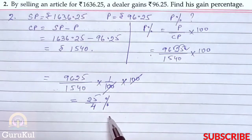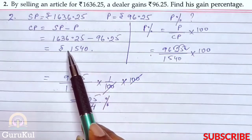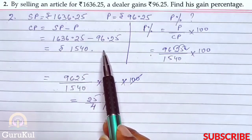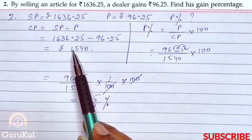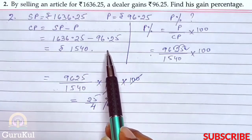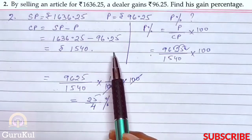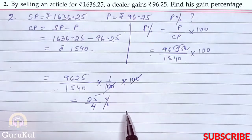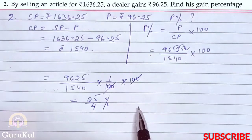One thing I would like to say: notice that in this question, most of the amounts are in decimal form. So when the question has decimals, my suggestion is to always leave your answer in decimal form.